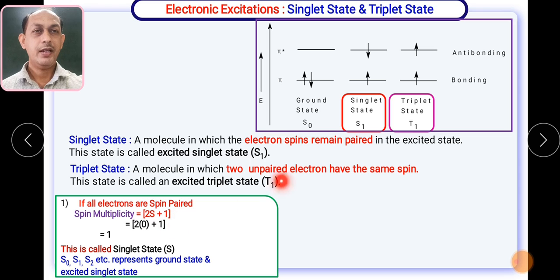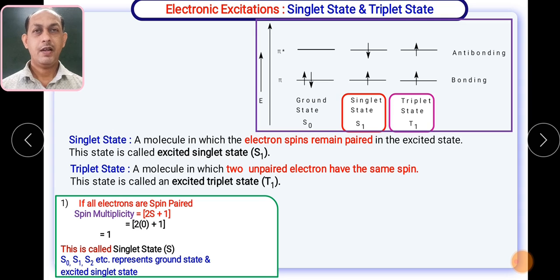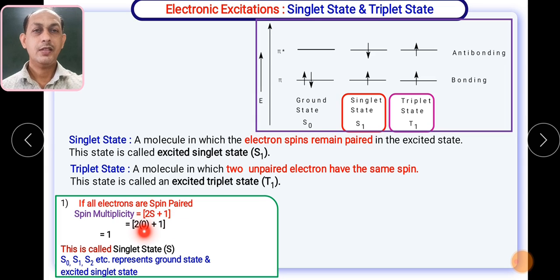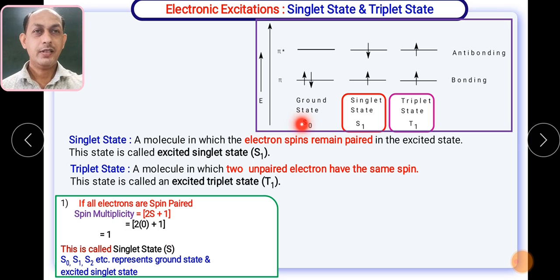Regarding spin multiplicity: why is it called a singlet state? It is directly related to the spin of the electron. In the singlet state, spins are +½ and −½, so +½ + (−½) = 0. The formula for spin multiplicity is 2S + 1. As the value of S is 0, the spin multiplicity comes out to 1, and this state is called a singlet state. The singlet ground state is represented as S0, the first excited singlet state as S1, the second as S2, and so on. S stands for singlet state.